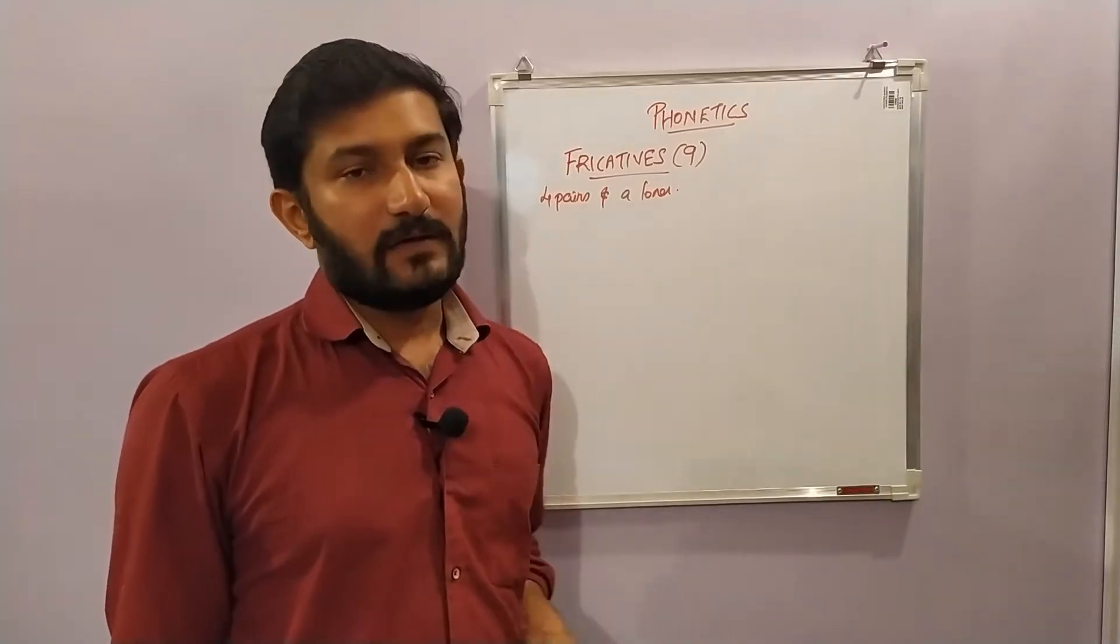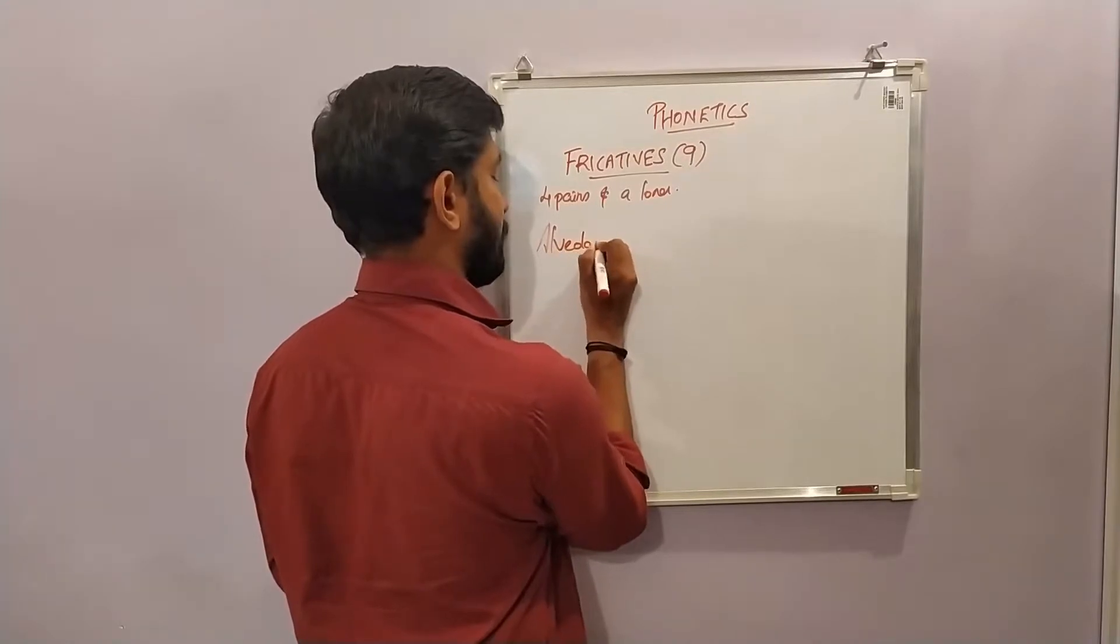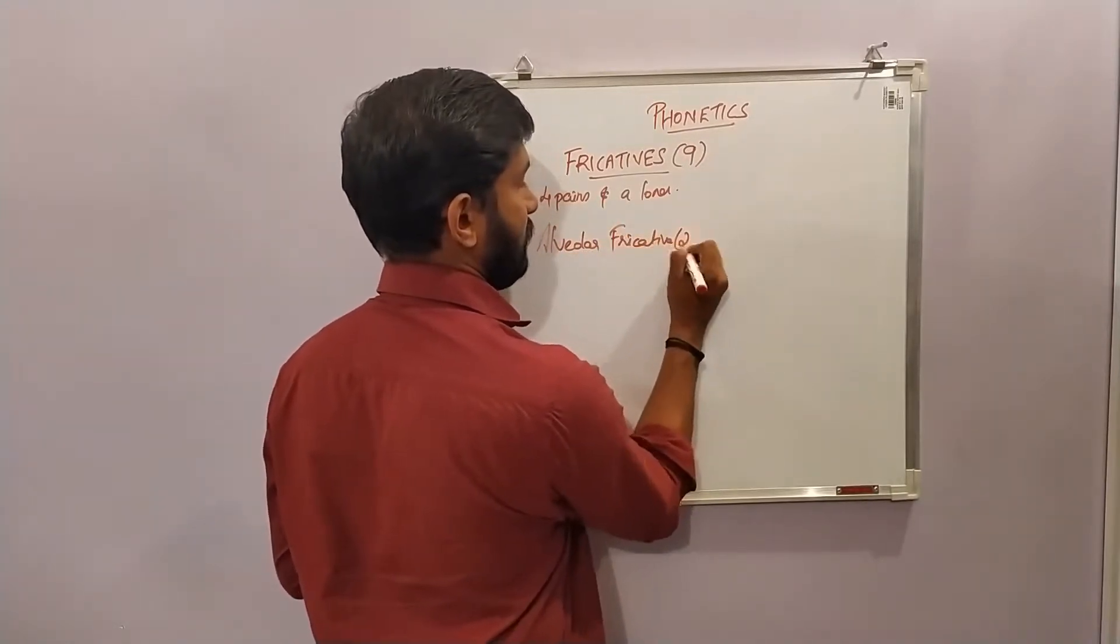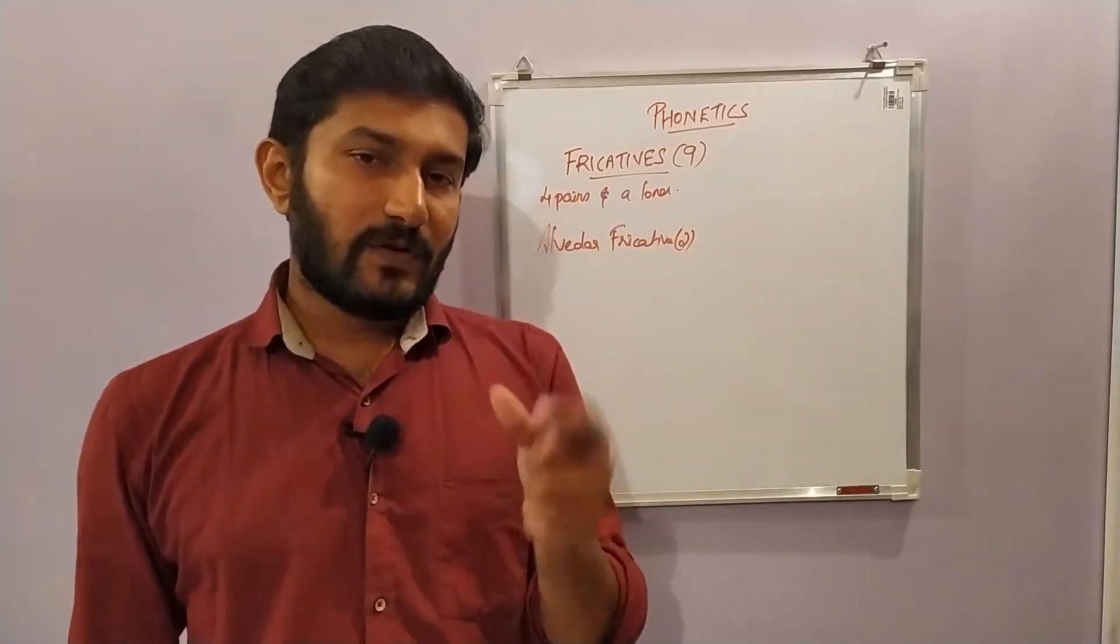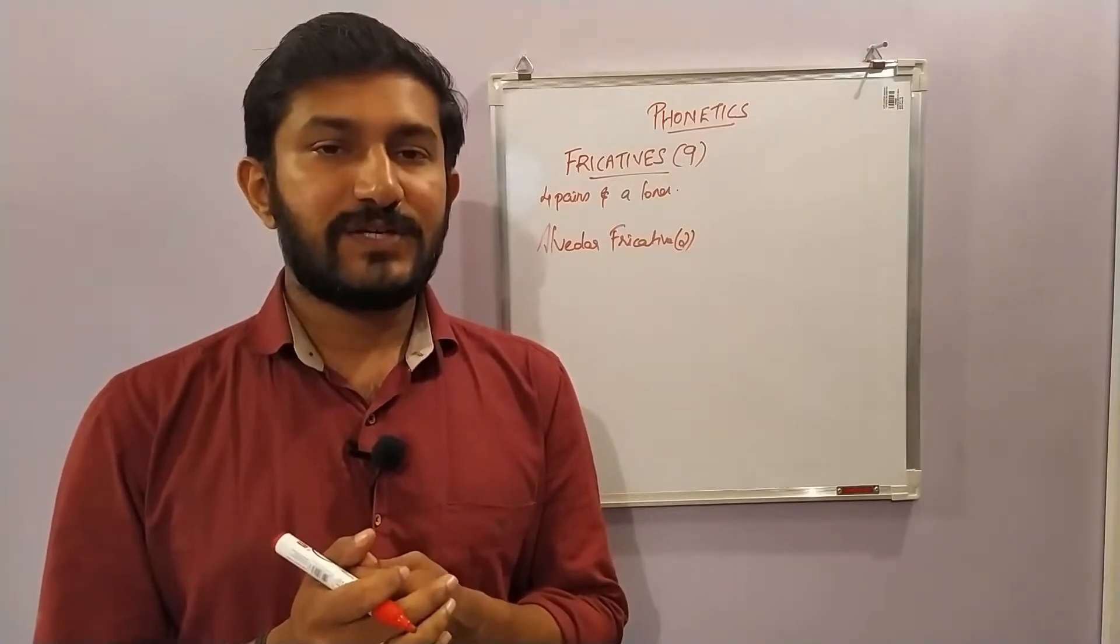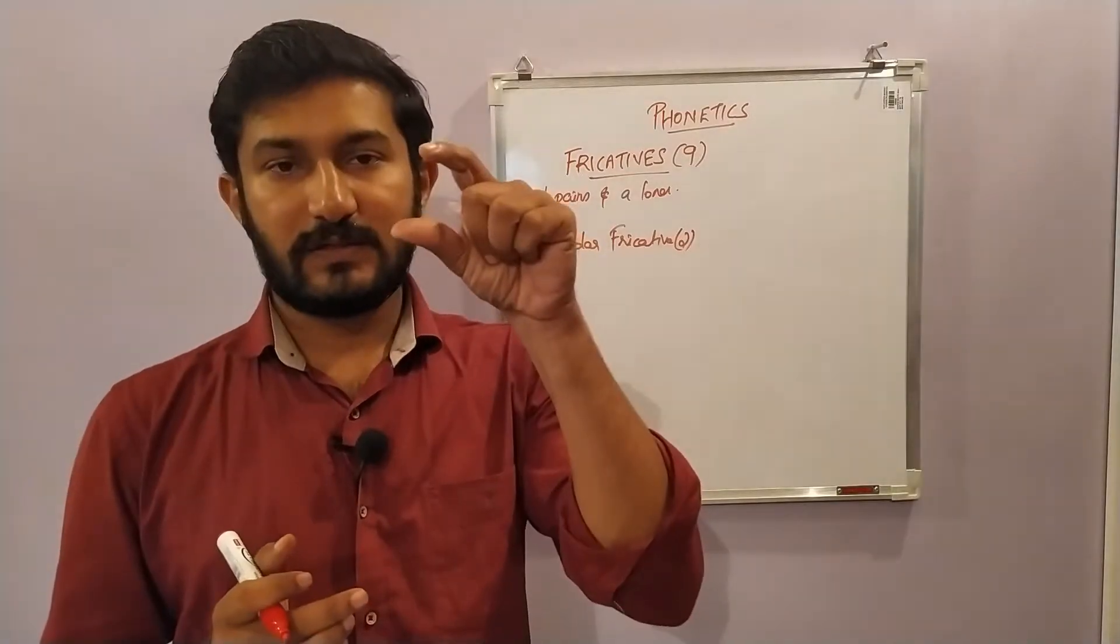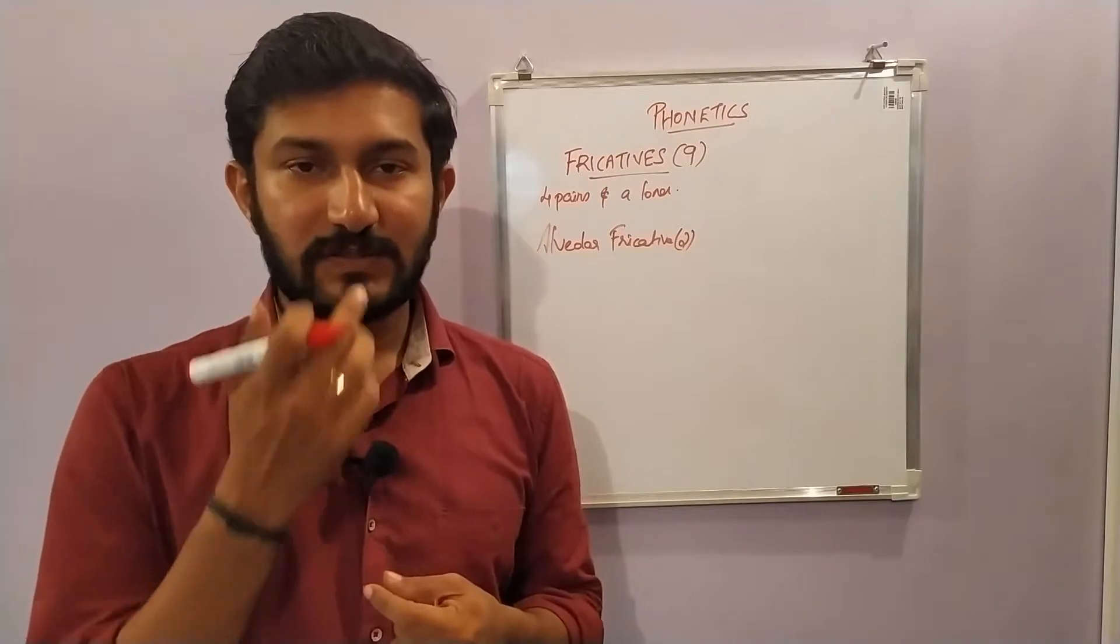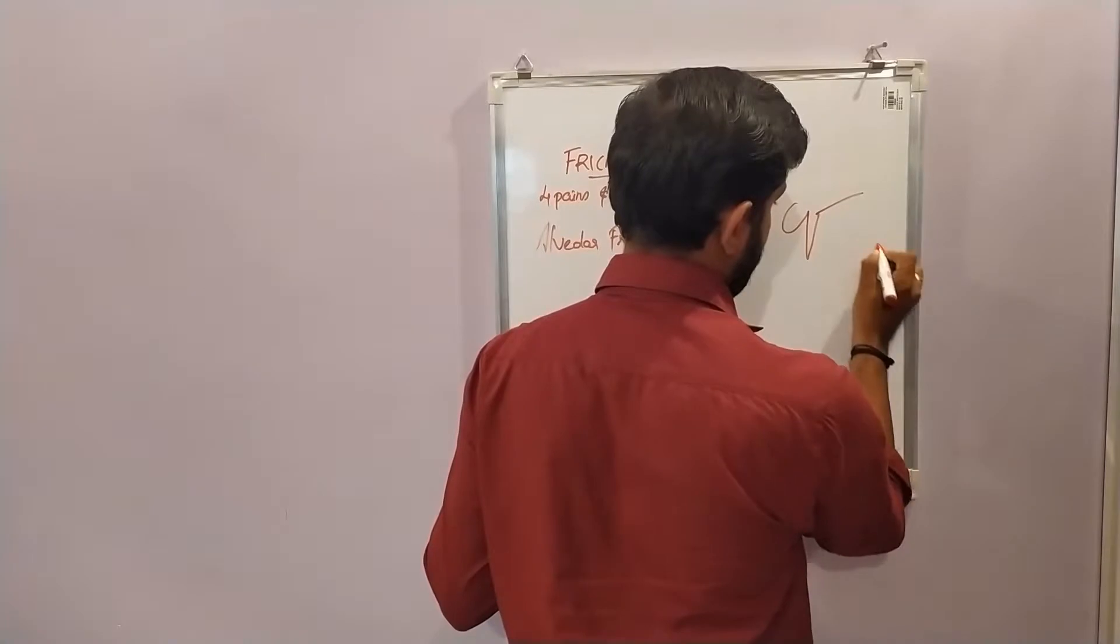The next pair: alveolar fricatives. We are familiar with alveolar plosives like /t/ and /d/. In the alveolar plosives, the tip of the tongue touches the teeth ridge or alveolar ridge.